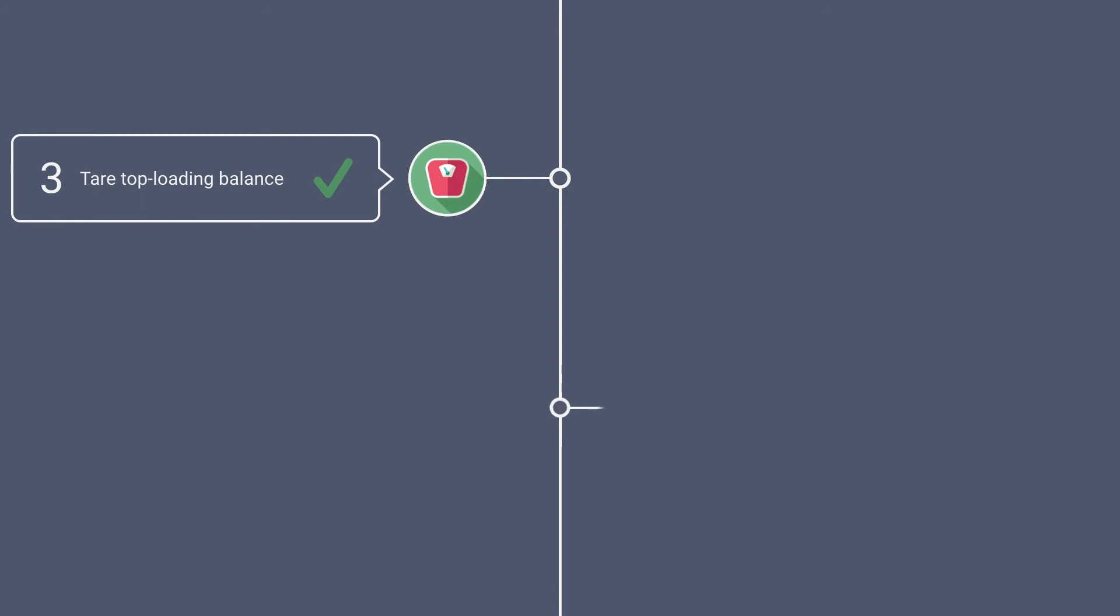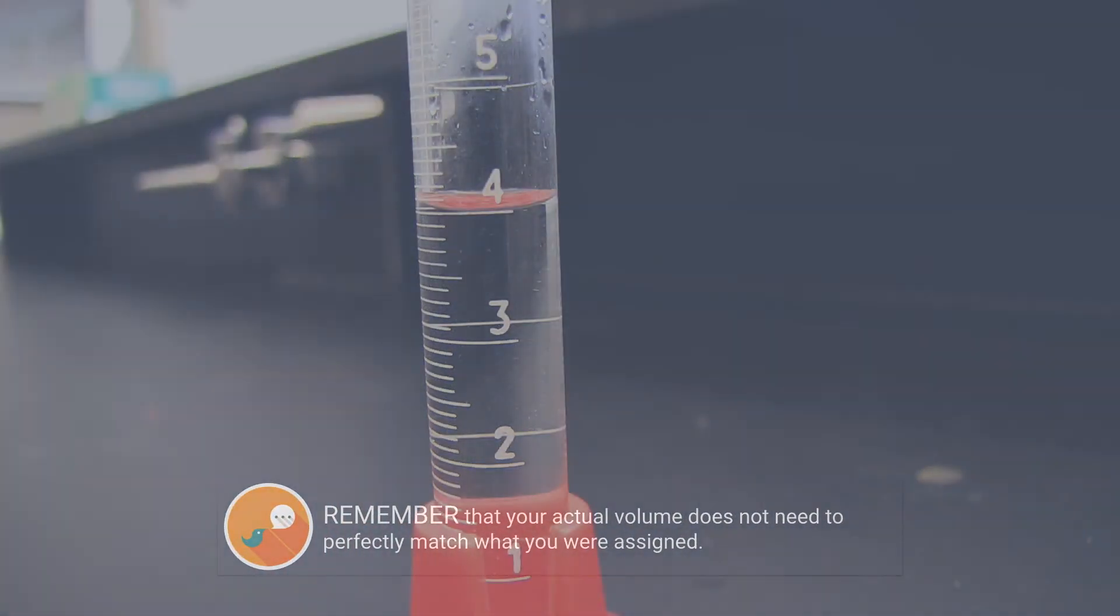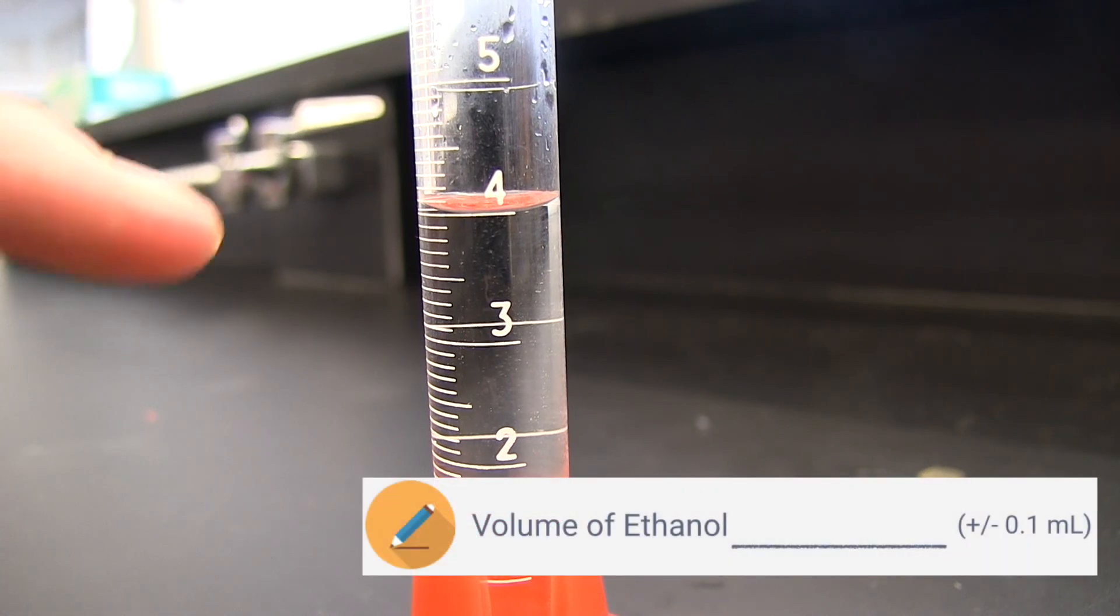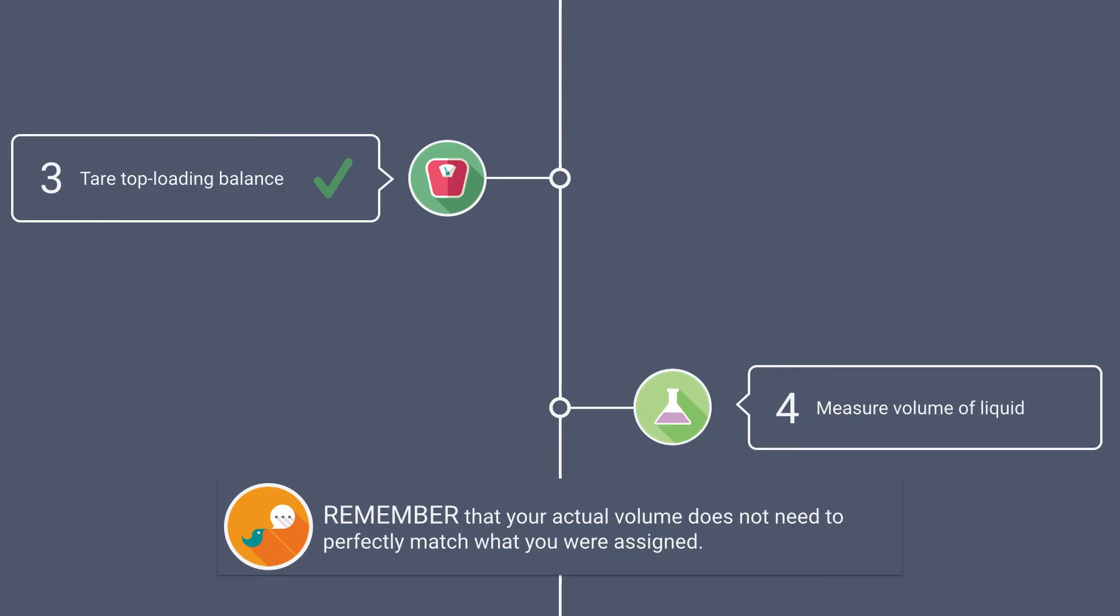Our next step is to double check the volume your teacher gave you. It's okay if it's not exactly what you were supposed to get. Write down the volume to the nearest tenth of a milliliter. In this case, our teacher gave us exactly 4.0 milliliters. That's it for this lab. Listen to your teacher on how to clean up. Good luck guys!